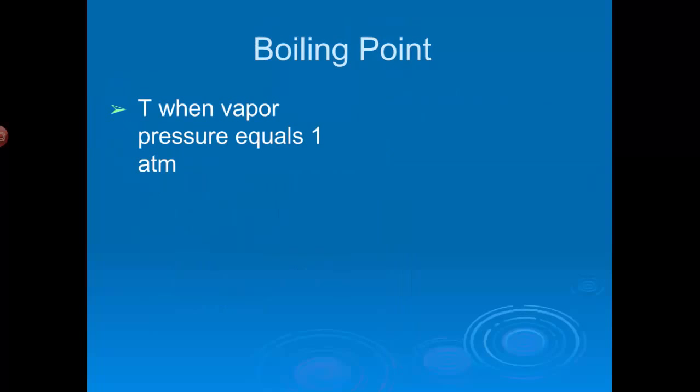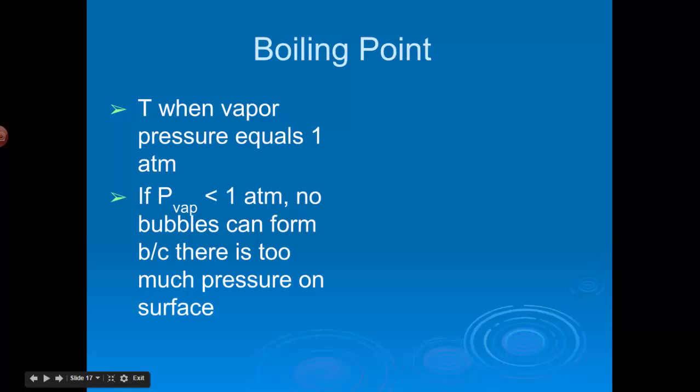Similarly, boiling point is the temperature when the vapor pressure is equal to one atmosphere. We talked about normal boiling point. If the vapor pressure of a liquid is less than one atmosphere, you can't make any bubbles. There's too much pressure above the liquid pushing back down on it, bubbles can't form.